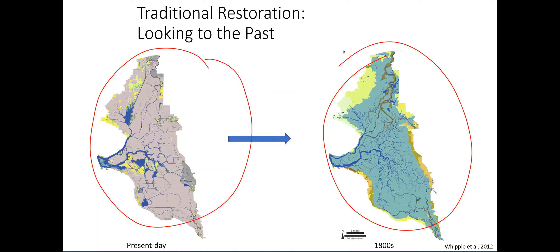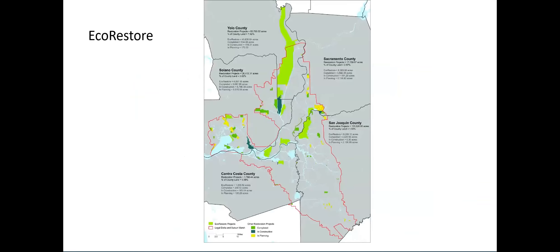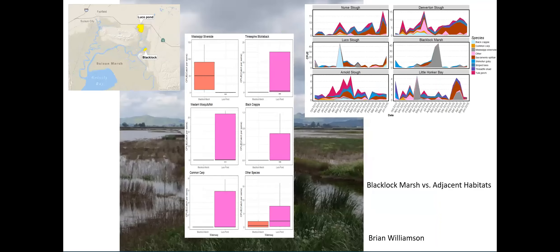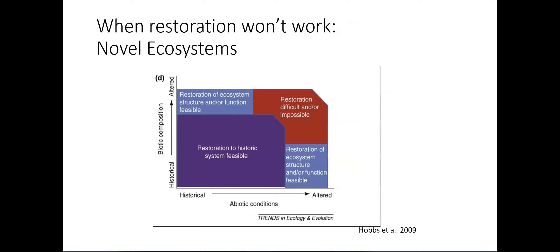We've tried to implement restoration, but it's been postage-stamp restoration. Research by Brian Williamson, our TA, has shown that a lot of the restoration has not been very effective, likely because we've created a novel ecosystem that doesn't function the way it should. When you restore a novel ecosystem to a natural state, it's still a novel ecosystem, and we have to learn how to manage that. Thank you very much for being patient with me today.